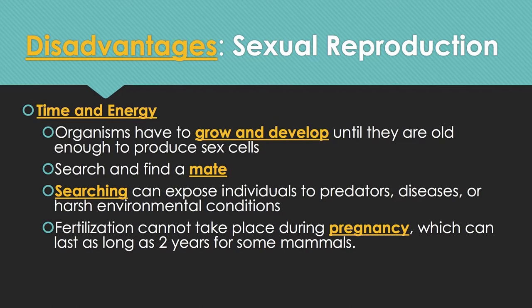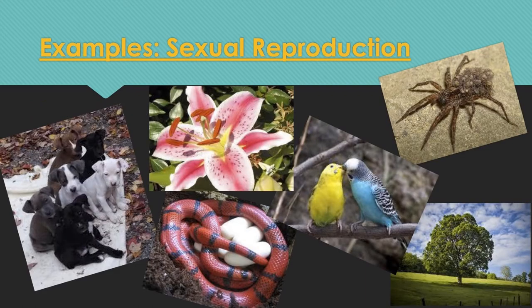Another disadvantage is that fertilization cannot take place during pregnancy. Once an organism is pregnant, it cannot be fertilized again during that pregnancy, and pregnancy can last as long as two years for some mammals — about nine months for humans. Here are some pictures showing examples of sexual reproduction — both plants and animals, including spiders and snakes, reproduce sexually.